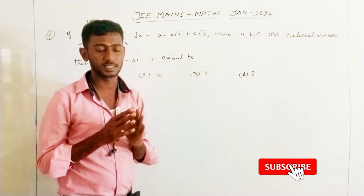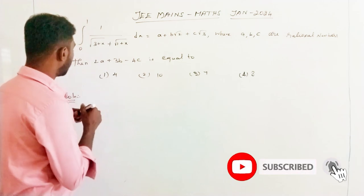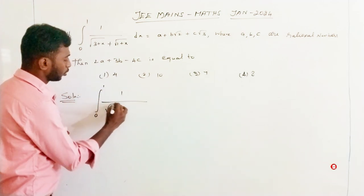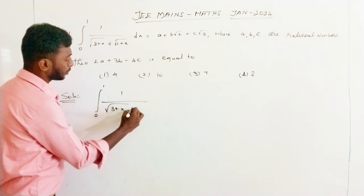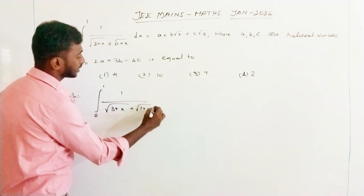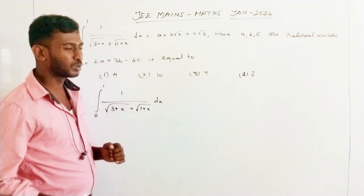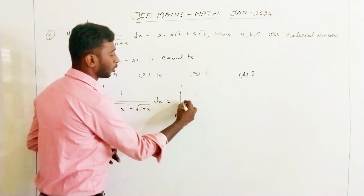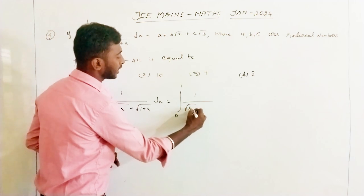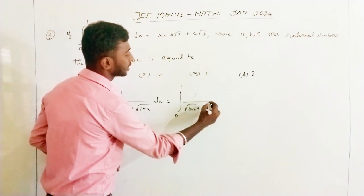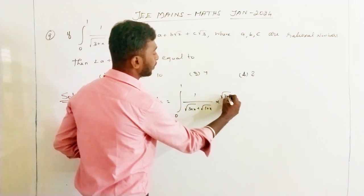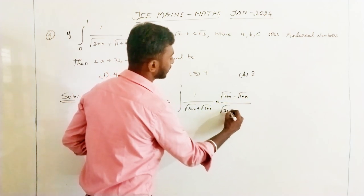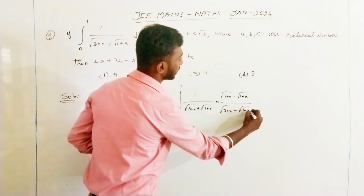So, the given integral is the integral over 0 to 1 of 1 divided by root of (3+x) plus root of (1+x) dx. How to do this? We are going to rationalize, which means multiplying by root of (3+x) minus root of (1+x) over root of (3+x) minus root of (1+x).